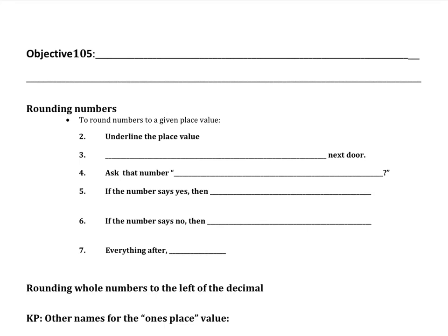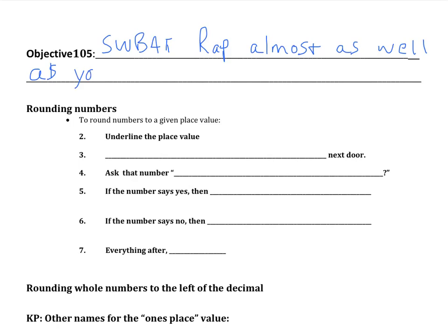Objective 105 is students will be able to wrap almost as well as your math teachers. The key here is almost, because let's be honest, you won't be able to wrap as well as we can.